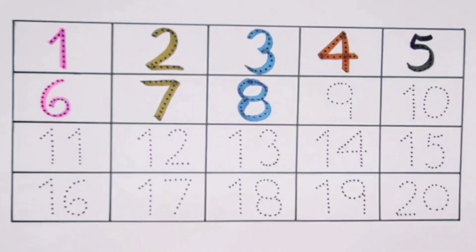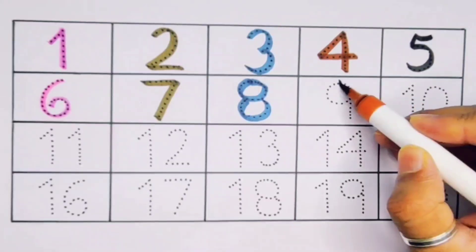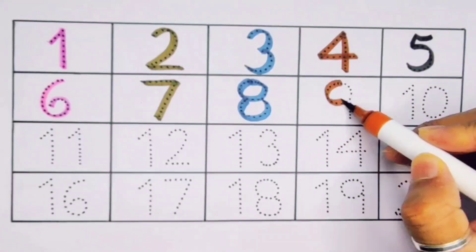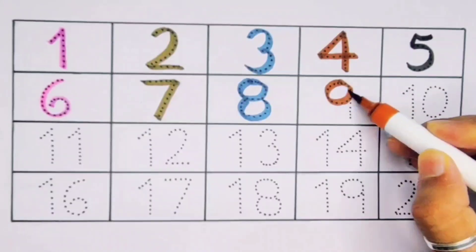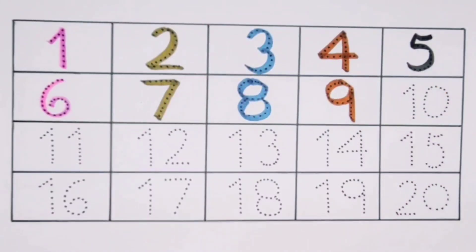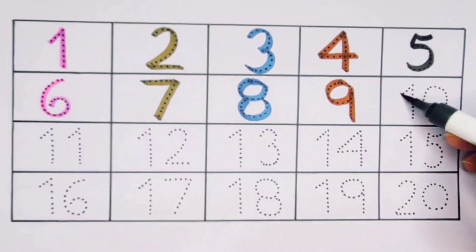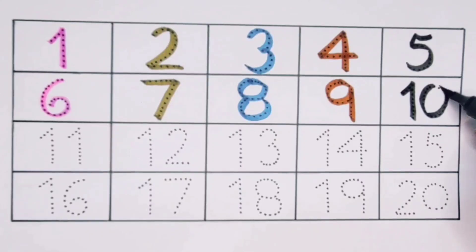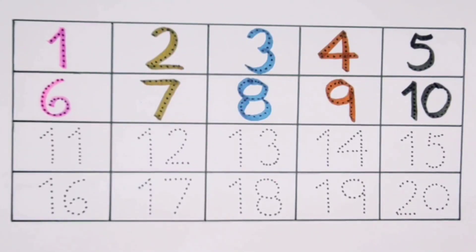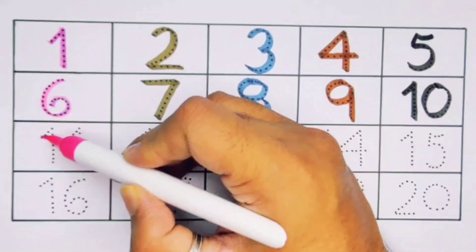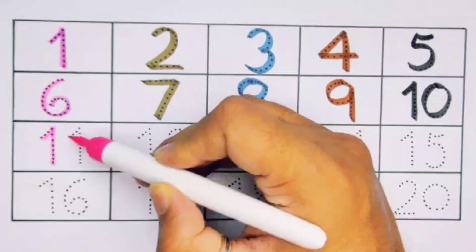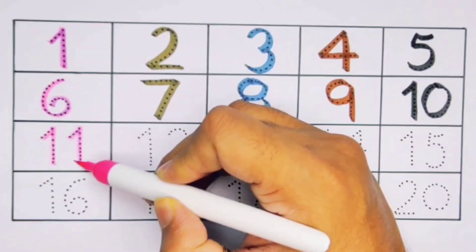Next, 9, number 9. Next, it's 10, 1-0, 10, number 10. Next, 11, 1-1, 11, number 11.